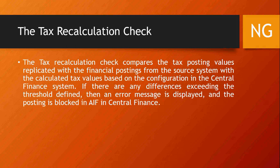The tax recalculation check compares the tax posting values in replicated financial postings. If there is tax posted on a document in the source system, it is replicated to S/4HANA; the system compares whether the tax in source and S/4HANA is equal. If something fails or doesn't match, it books the error in AIF and blocks the document. That's why tax consistency and tax configuration postings must be the same in both systems.